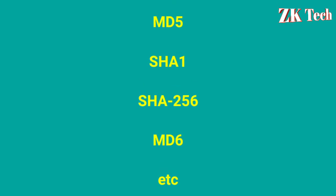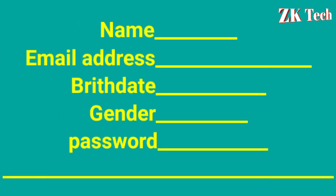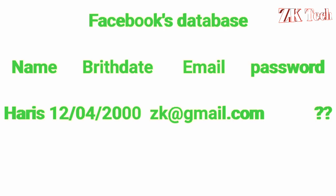As an example, let's consider Facebook. The first time when we create a Facebook account, we have to fill a form like this, which contains our name, our age, our email, our birth date, and it asks us to choose a password. Once we click on sign up, this data is sent to Facebook's database, where our name, gender, age, and email are stored.